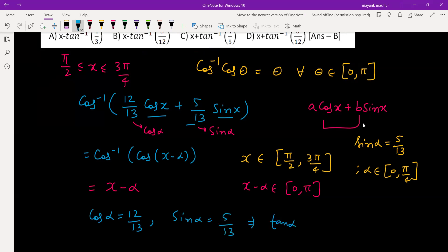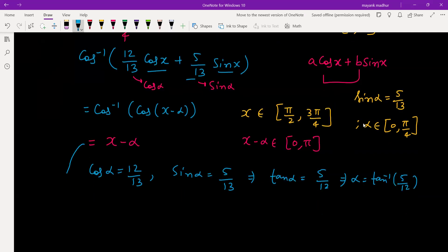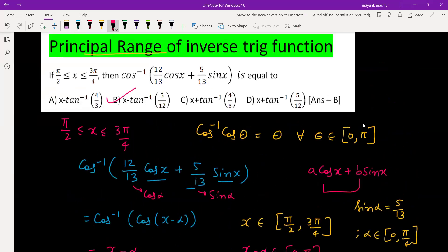So this answer which we got as x - α can be written as x - tan inverse of 5/12. Now let's check which answer is this. x - tan inverse 5/12 is option B, and yes that is the answer given.